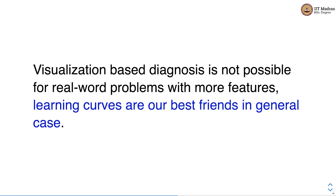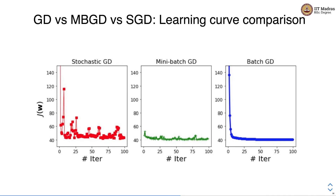Since we used a simple linear regression model with a single feature, we were able to visualize the trajectories of all three strategies. However, when we use more features — as is the case with real-world examples — we would not be able to use such visual diagnostics. In such cases, as seen earlier, learning curves are our best friends. Let us understand the trajectories of these three variations using learning curves.